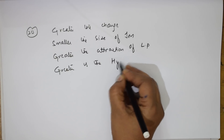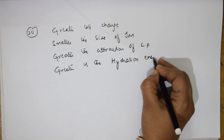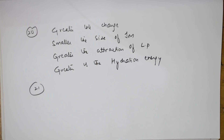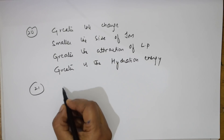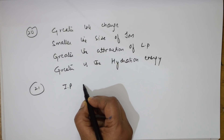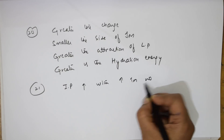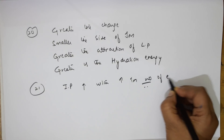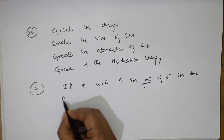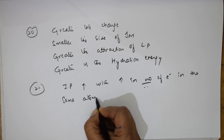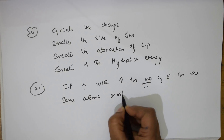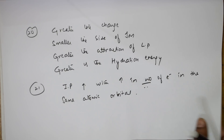These are the clues to remember — if you remember them, it's easy to solve any type of question. The 21st concept: ionization potential increases with an increase in the number of electrons in the same atomic orbital.